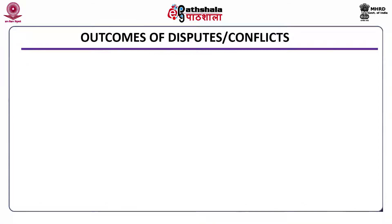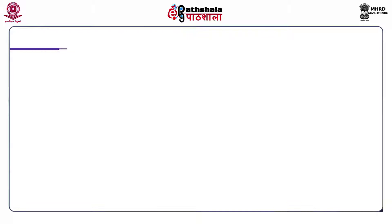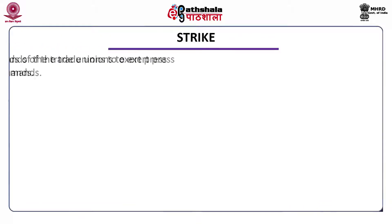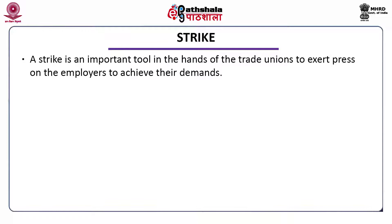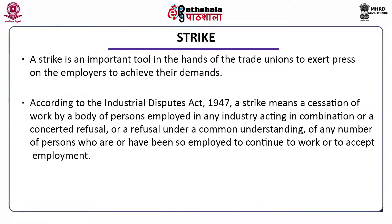Outcomes of disputes or conflicts are categorized into four things: strike, picketing, gherao, and lockout. The strike is a very important tool in the hands of trade unions to exert pressure on employers to achieve their demands. According to the Industrial Disputes Act 1947, a strike means a cessation of work by a body of persons employed in any industry acting in combination, or a concerted refusal under a common understanding of any number of persons who are or have been so employed to continue to work or to accept employment.